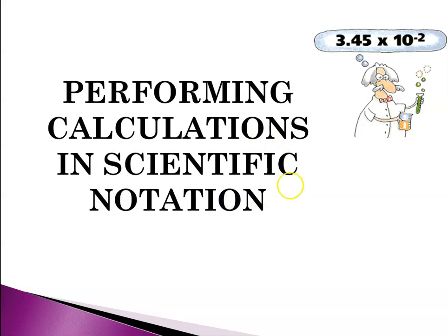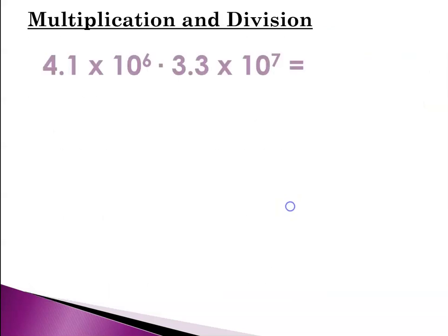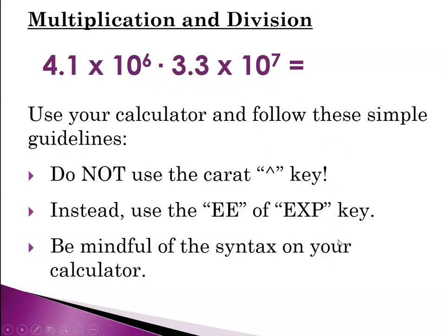So now a little bit more tricky: performing calculations in scientific notation when you're doing multiplication and division. So for multiplication and division, let's say you were given 4.1 times 10 to the 6th and you're multiplying that times 3.3 times 10 to the 7. You're going to use your calculator and you're going to follow these guidelines.